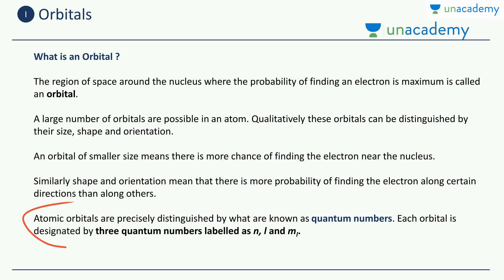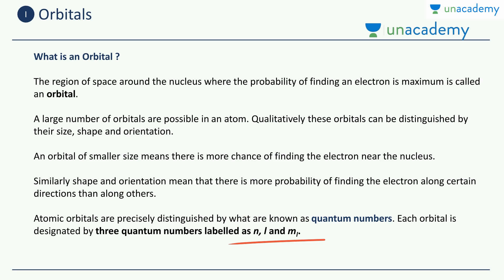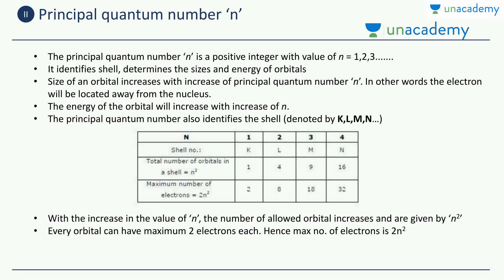Atomic orbitals are precisely distinguished by what are known as quantum numbers. Each orbital is designated by three quantum numbers: the principal quantum number N, the azimuthal quantum number L, and the magnetic orbital quantum number ML. So let us look at all of them one by one. The first one is the principal quantum number, which is denoted by the letter small n.